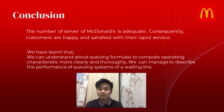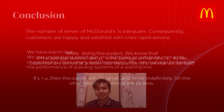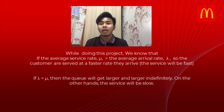Based on our project, we conclude that the number of servers at McDonald's is adequate, and consequently customers are happy and satisfied with the rapid service. We have learned to understand queuing formulas to compute operating characteristics more clearly. We can describe the performance of the queuing system for the drive-thru. We also know that if mu is greater than lambda, customers are served faster than they arrive; but if lambda is greater than mu, the queue grows larger and service becomes slow.